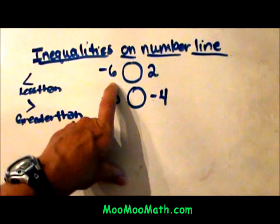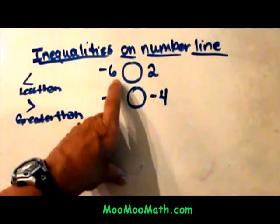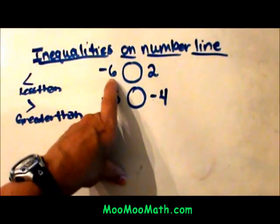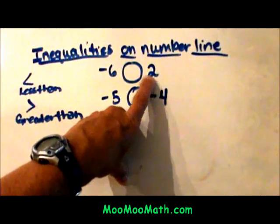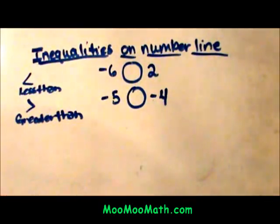We are going to do some comparing of integers. Integers are just positive and negative numbers, so we are comparing negative 6 to positive 2 and negative 5 to negative 4.